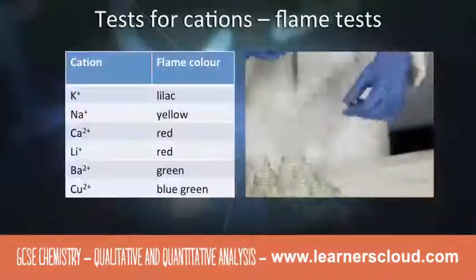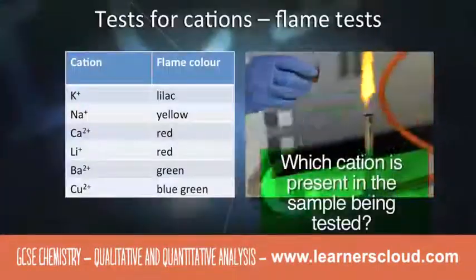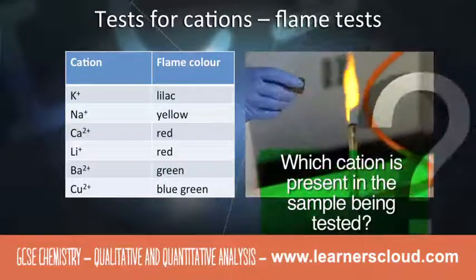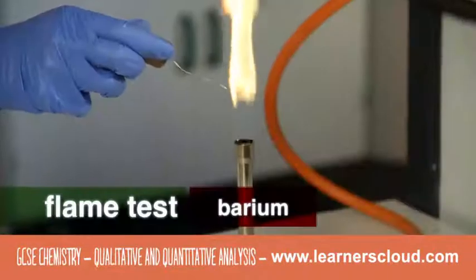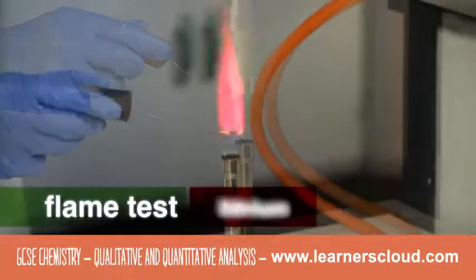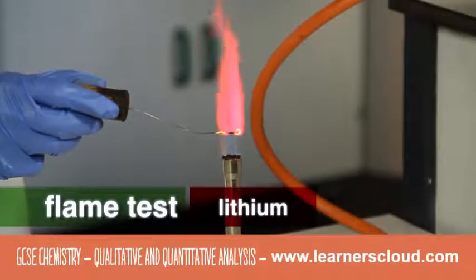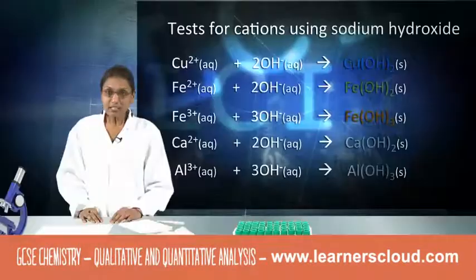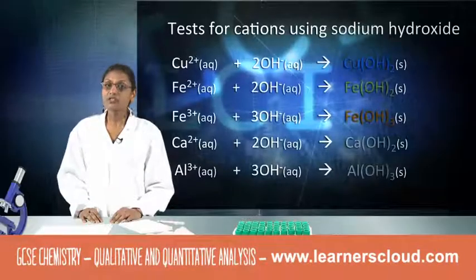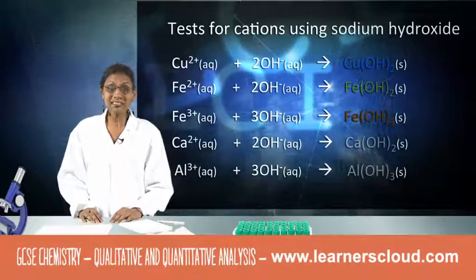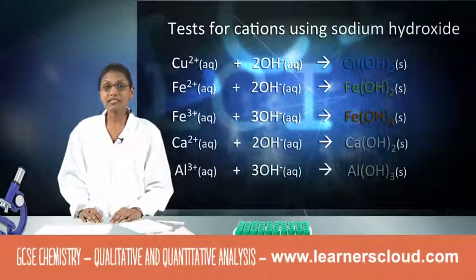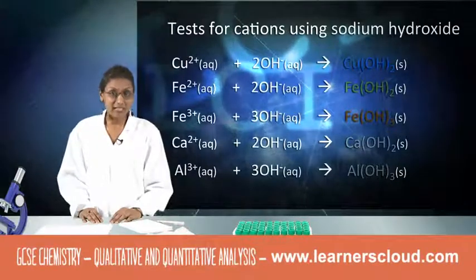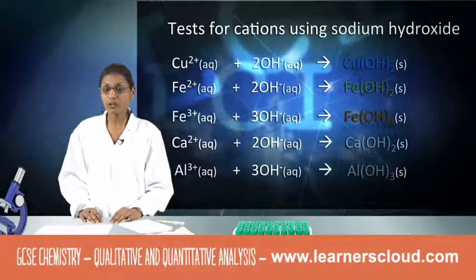Which cation is present in the sample being tested here? The colours in flame tests are produced by the metal ions in the compound. Take note that sodium is not included in these reactions because it is a spectator ion.